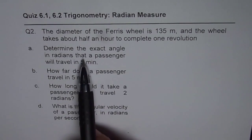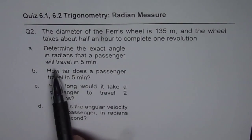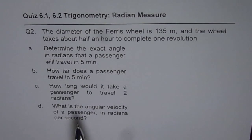Determine the exact angle in radians that a passenger will travel in five minutes. Part B is how far does a passenger travel in five minutes? Part C, how long would it take a passenger to travel two radians?